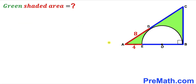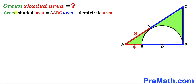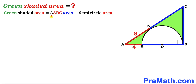Since we are interested in calculating the green shaded region area, let's make an observation. The green shaded region area is going to be equal to the area of the big triangle ABC minus the area of the semi-circle. So our task is to calculate the area of triangle ABC and the area of the semi-circle.